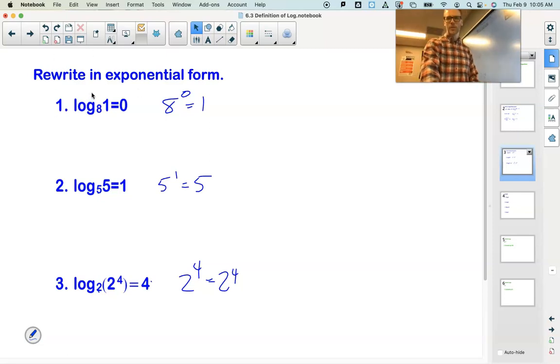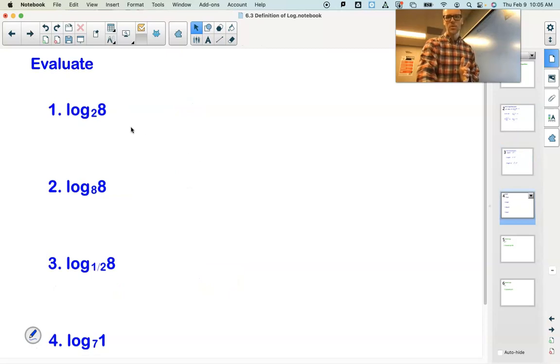All right. So if we can rewrite logarithms as exponentials, we should then be able to use that concept to help us evaluate the logarithm. So notice there's no equal signs in any of these. That's because we want to figure out, when we say the word evaluate, we want to figure out what does the logarithm equal. Well, the log base 2 of 8.